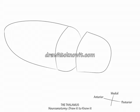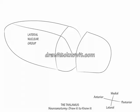Label the top as medial and the bottom as lateral. Now draw the internal medullary lamina along the anterior-posterior axis of the thalamus. Just lateral to the internal medullary lamina, label the lateral nuclear group and show that it connects with the limbic system.